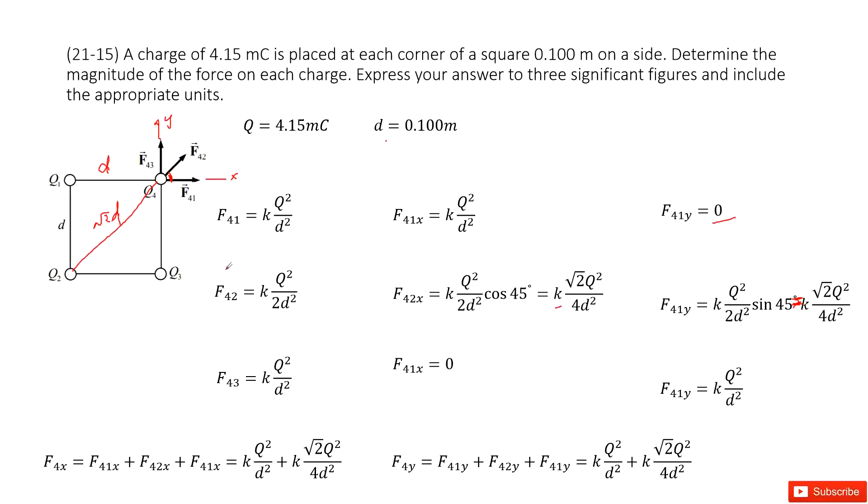Now we can find the net force on particle 4 in x component and y component. So at x component, it becomes F401x plus F402x plus F403x. And F404y is F401y plus F402y plus F403y. You add zero plus this term plus this term.